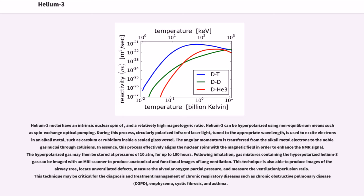Helium-3 nuclei have an intrinsic nuclear spin of 1/2 and a relatively high magnetogyric ratio. Helium-3 can be hyperpolarized using non-equilibrium means such as spin-exchange optical pumping. During this process, circularly polarized infrared laser light, tuned to the appropriate wavelength, is used to excite electrons in an alkali metal, such as cesium or rubidium inside a sealed glass vessel. The angular momentum is transferred from the alkali metal electrons to the noble gas nuclei through collisions. In essence, this process effectively aligns the nuclear spins with the magnetic field in order to enhance the NMR signal. The hyperpolarized gas may then be stored at pressures of 10 atmospheres, for up to 100 hours.